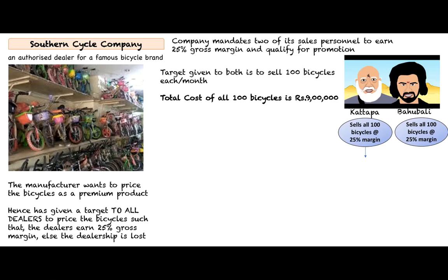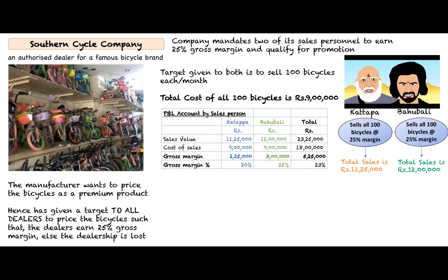Kattapa has collected rupees 11,25,000 while Bahubali has collected rupees 12 lakh. Why the difference? Both have earned the same margin for the same cost. Let's understand this with a profit and loss account table broken down by salesperson, starting with the Kattapa column.